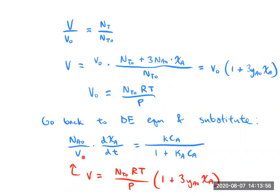And let's just do that substitution for now. That gives us, with some rearranging, P times NA0 over RT times NTO times one plus three YA0 times conversion of A times the derivative of conversion of A with respect to time equals KCA over 1 plus K times CA.